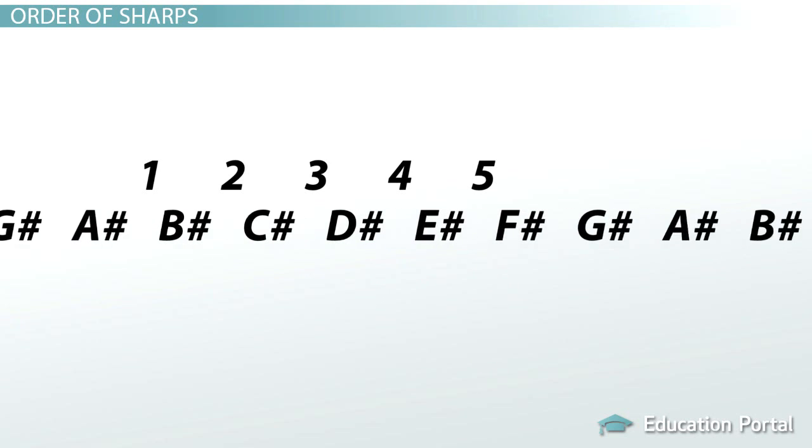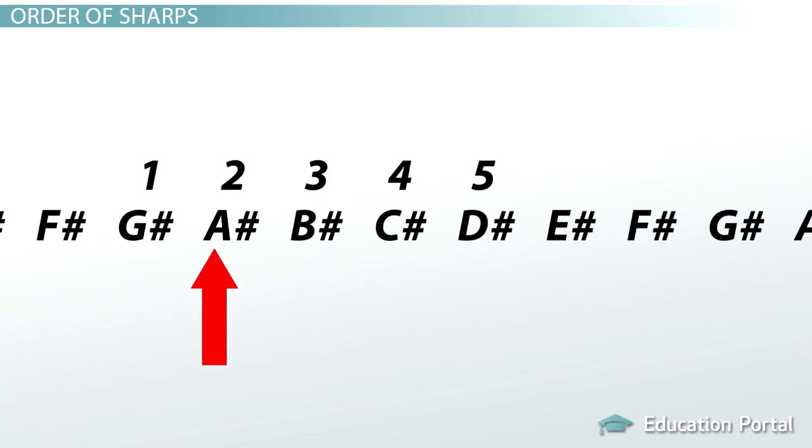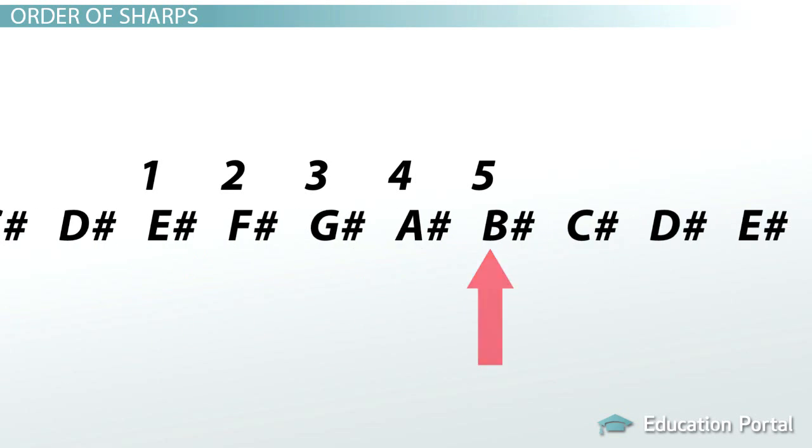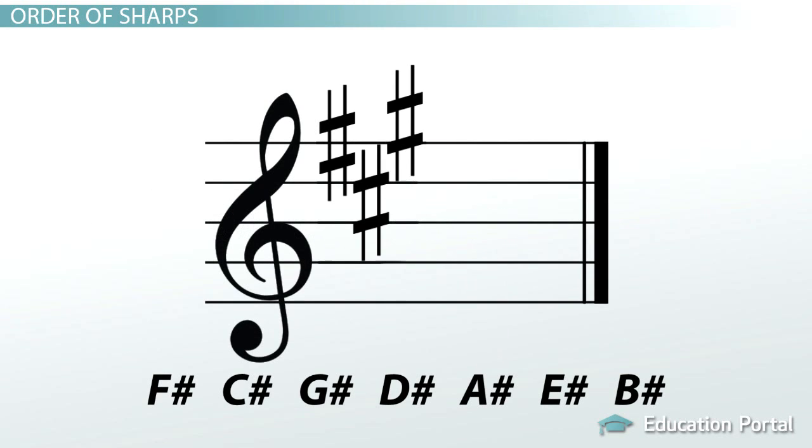If we need another sharp, we can call C sharp 1, and counting through, we can see the fifth sharp would be G sharp. We can continue this all the way through the order, making sure that the letters are always a fifth apart. And we would arrive again at the order of sharps: F sharp, C sharp, G sharp, D sharp, A sharp, E sharp, and B sharp.